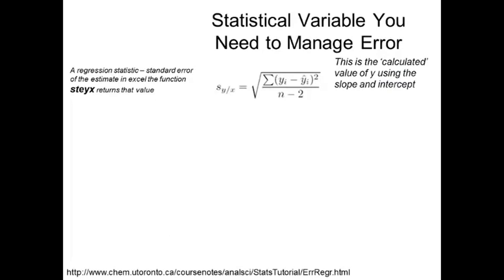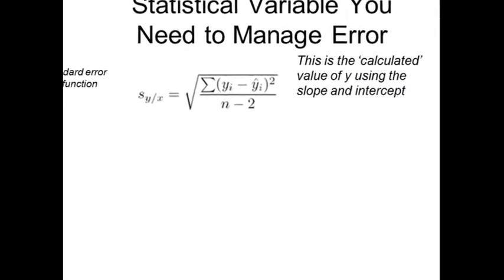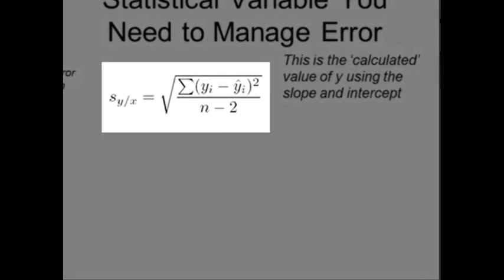So one of the key statistical variables we will apply is something called the standard error of the estimate. It's sometimes called the standard error of regression, but standard error of the estimate seems to be the most consistent terminology. It's always written as s sub y slash x. And as you can see here, it's the square root of the value of your calibration at a particular point minus this yi with a little hat over it.